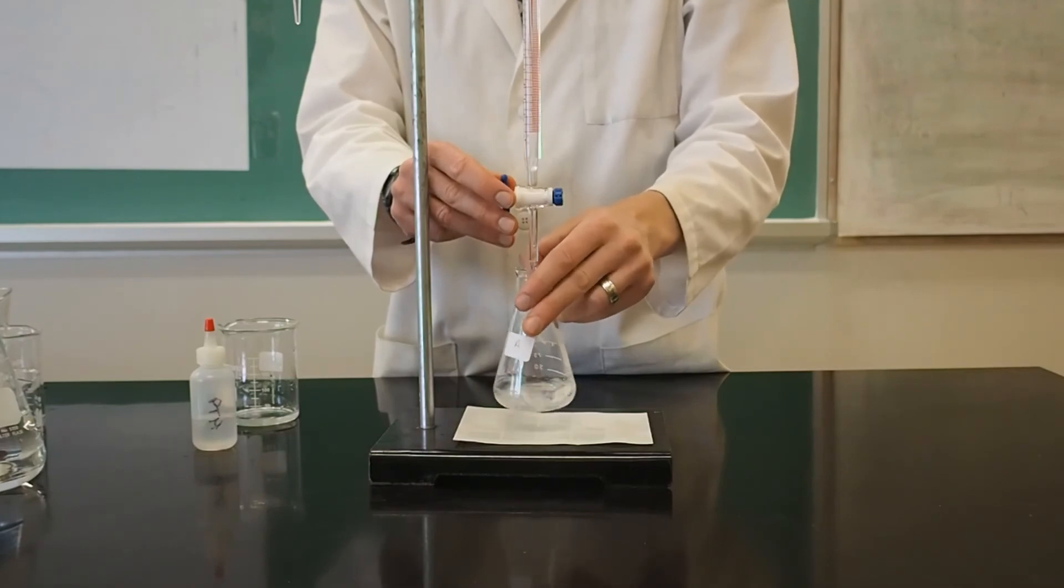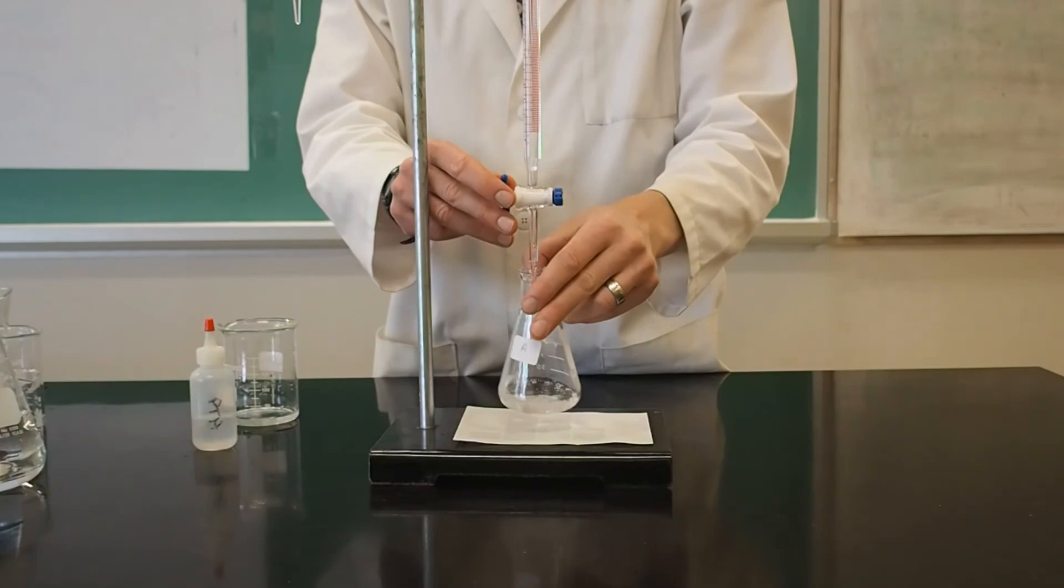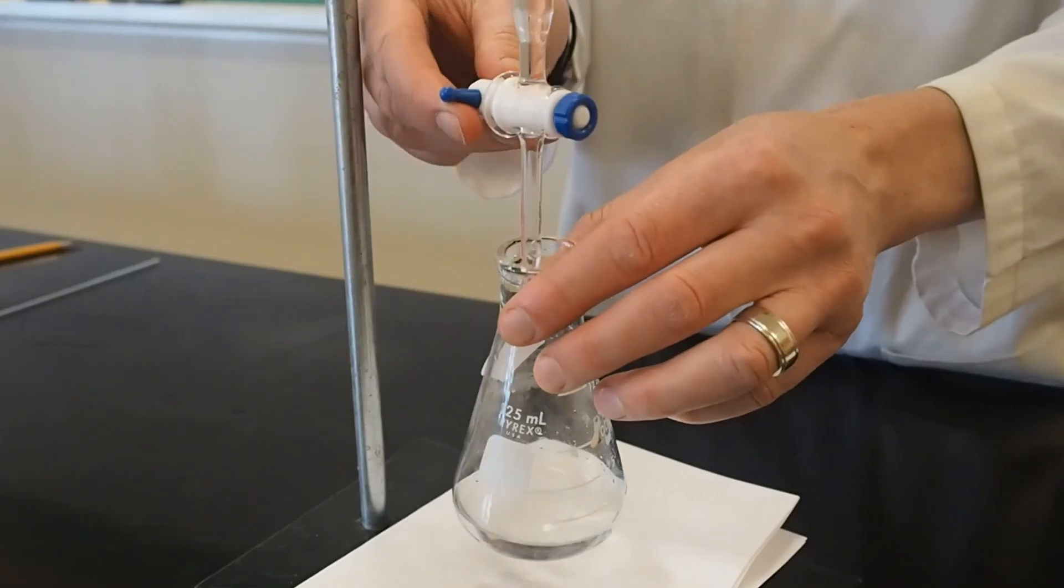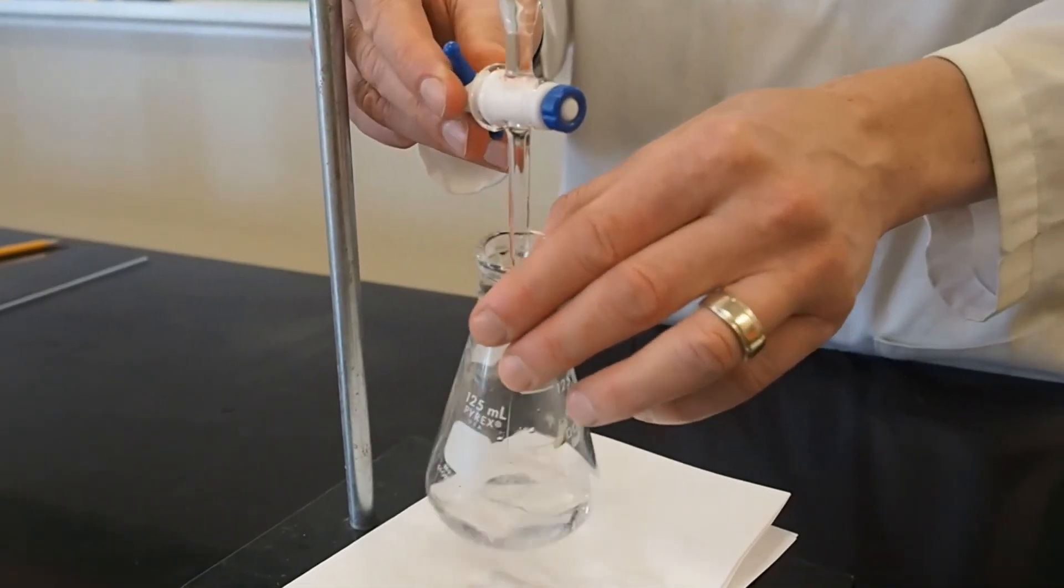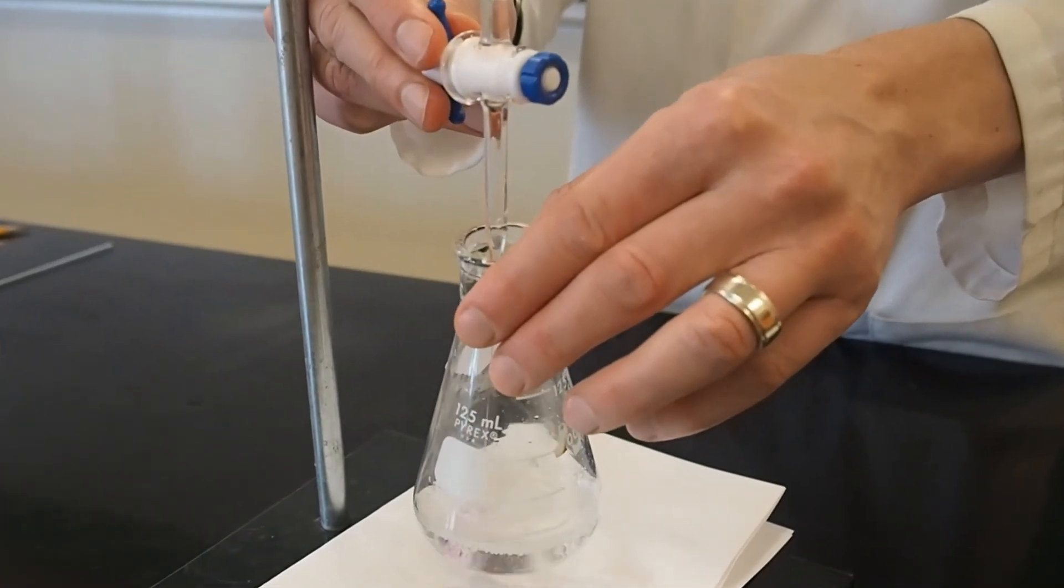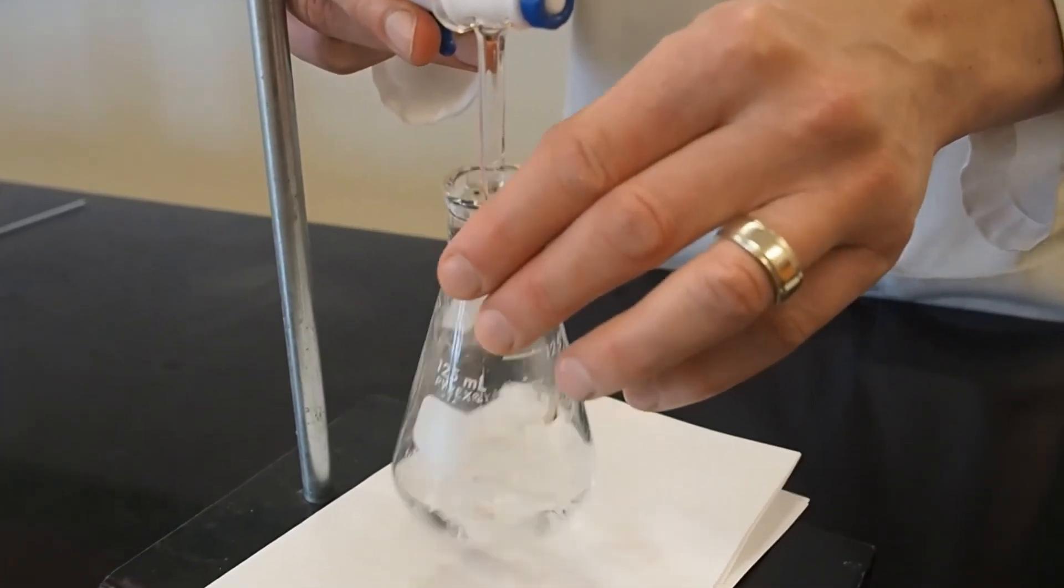Here is the technique for titrating. One hand should remain on the stopcock so you can stop the flow of solution quickly. Your other hand should be around the neck of the flask with the sample solution, which should be swirled continuously.